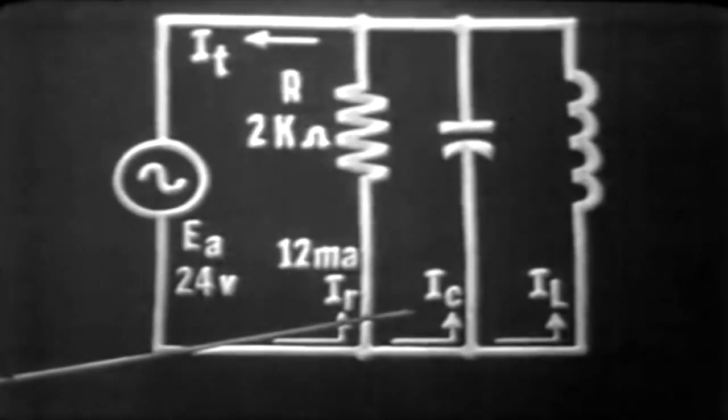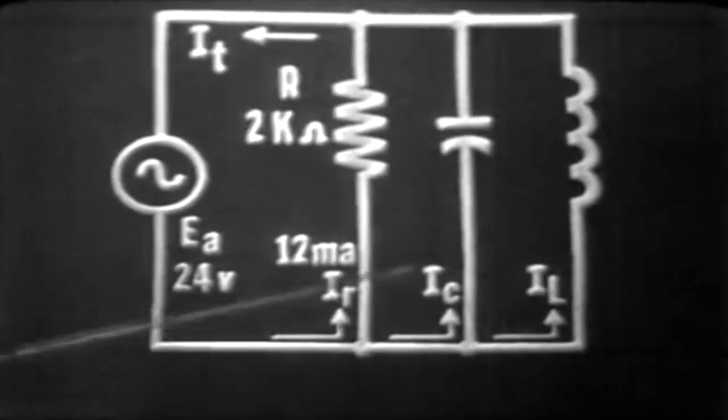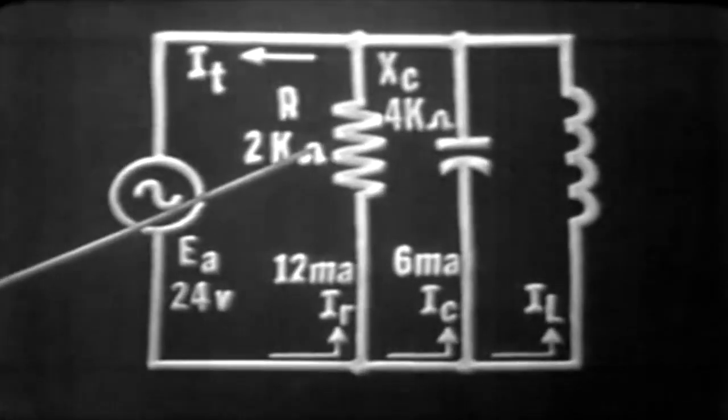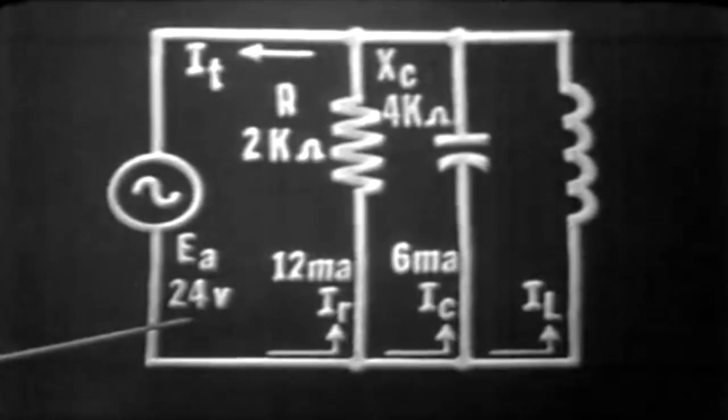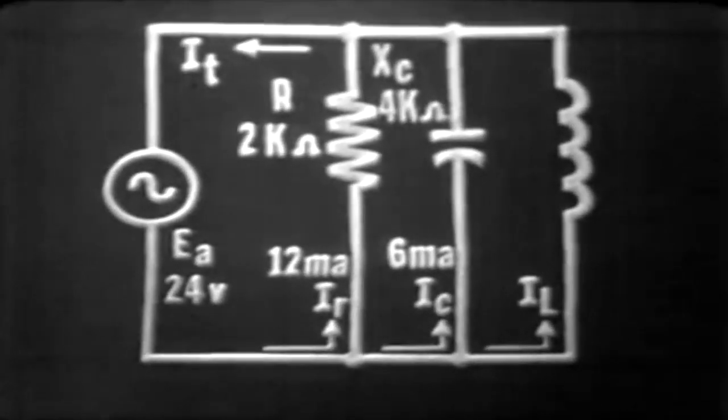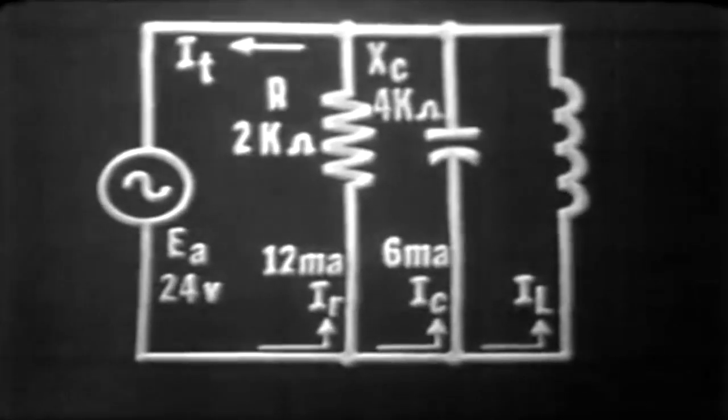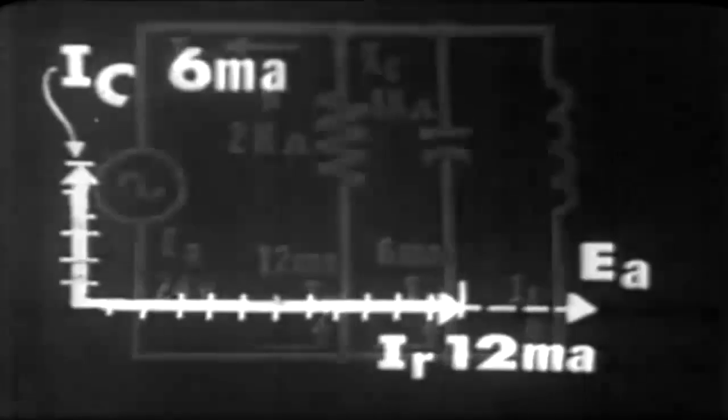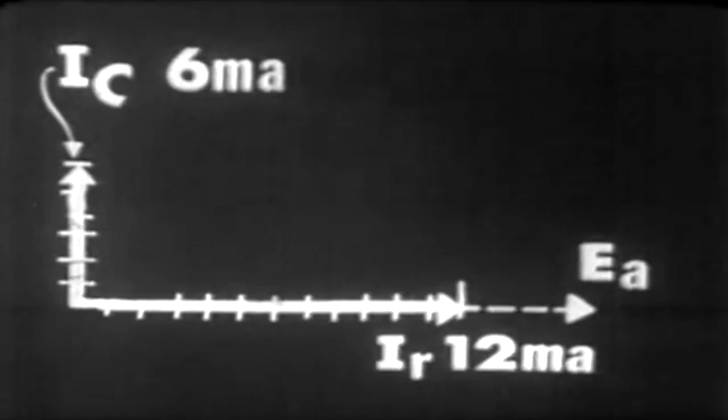Next would be IC, our capacitive current. If we assume a capacitive reactance of 4k ohms with 24 volts applied across our capacitor, then we will have a capacitive current of 6 milliamperes. It would be vectorially plotted this way. IC would lead IR by 90 degrees and is equal to 6 milliamperes or 6 units long.